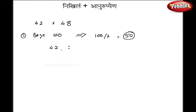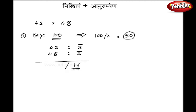42 minus 50 gives minus 8, and 48 minus 50 gives minus 2. Minus 8 into minus 2 gives 16. Now mind well, my base is 100 with two zeros, so I should have two figures to my right hand side. Then 42 minus 2 is 40. But this is not my final answer. I divided 100 by 2, so I will divide 40 by 2. My right hand side remains the same. So my final answer is 2016.